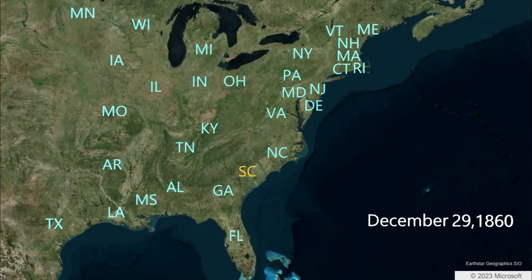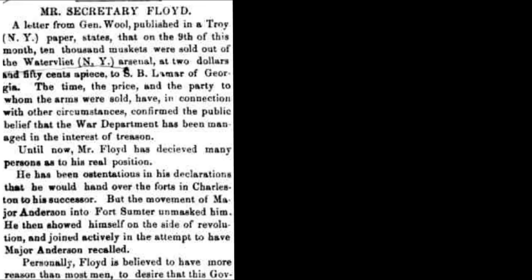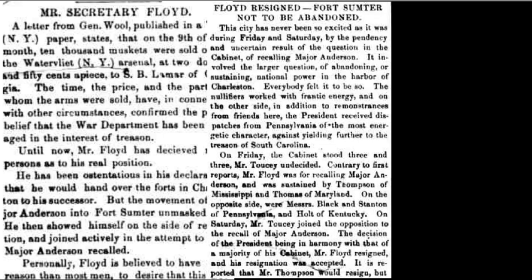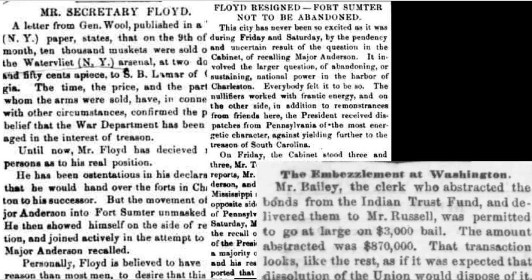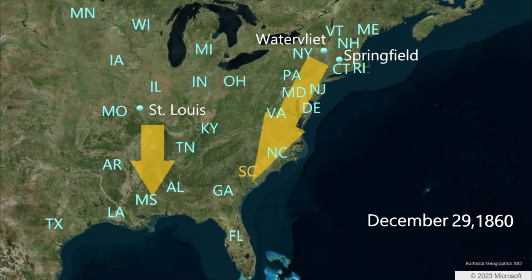December 29th, in Washington, Secretary of War John Floyd's suspicious behavior has caught up to him — Floyd resigns. Newspapers across the country are realizing the extent of Secretary Floyd's suspicious and likely illegal activities while at the head of the War Department. Revelations emerge that well over 100,000 muskets have been suspiciously transferred from northern arsenals like Springfield, Massachusetts; Watervliet, New York; and St. Louis, Missouri, down to the south.